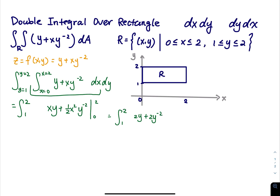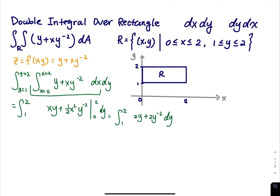After plugging in x equals 2, we have 2y plus 2y to the negative 2. When we plug in x equals 0, both terms become zero, so the lower bound contributes nothing. This leaves us with the integral from 1 to 2 of 2y plus 2y to the negative 2 dy.